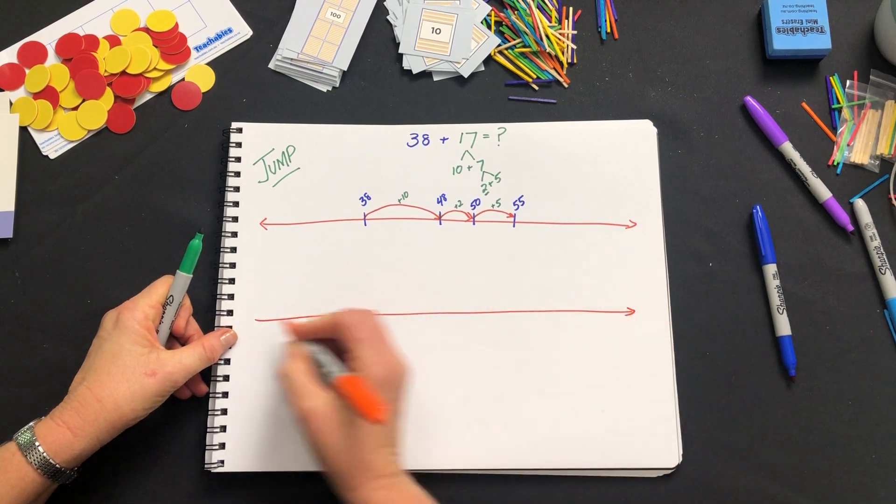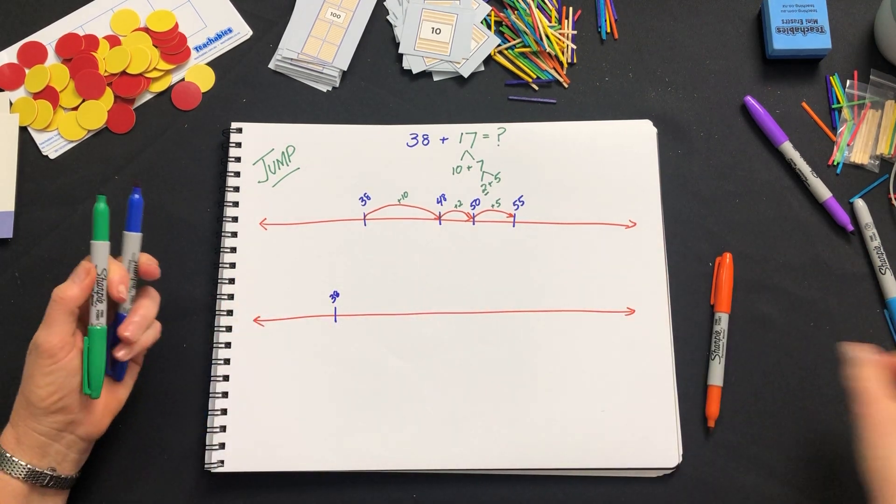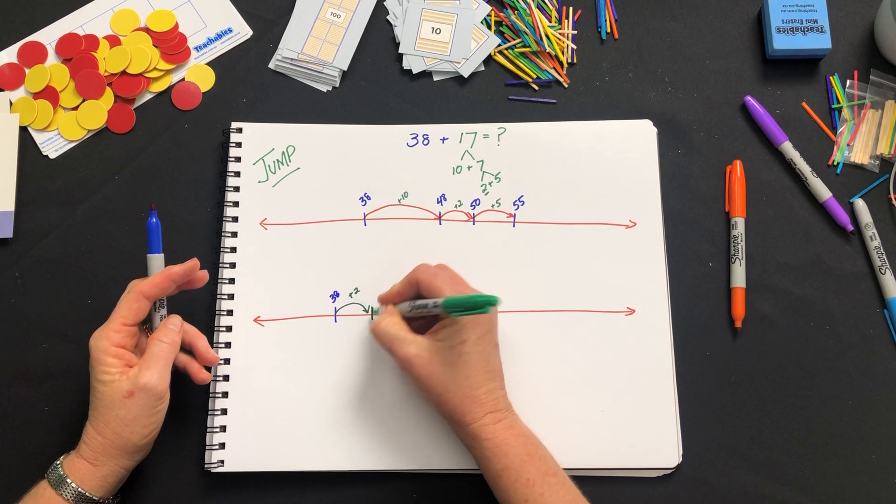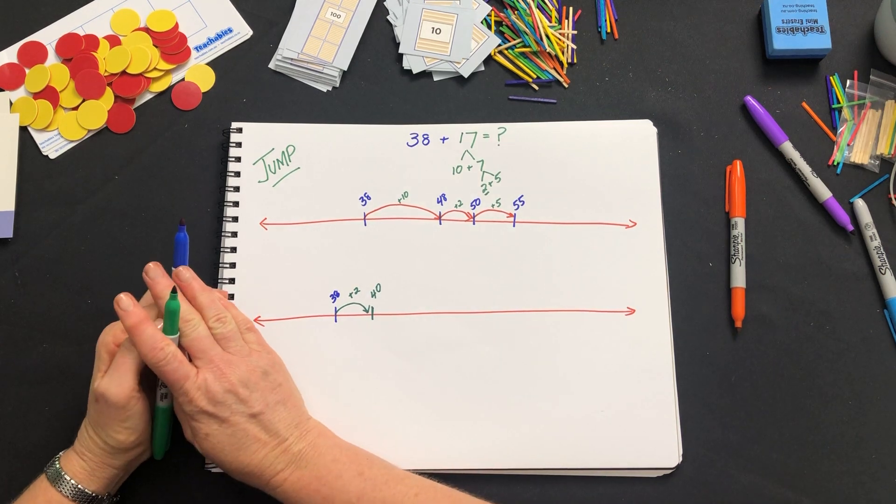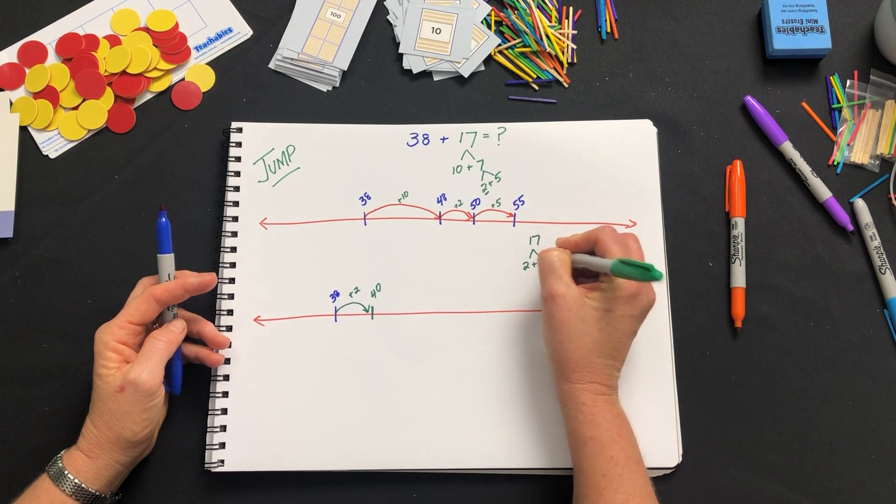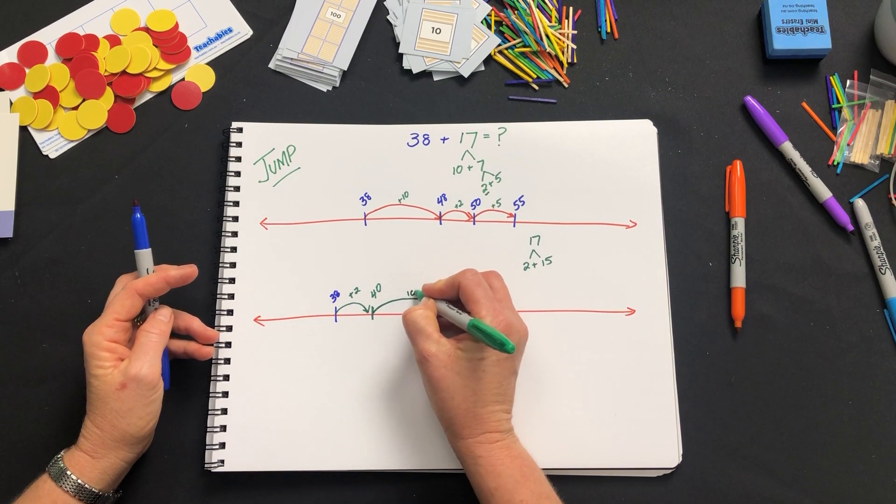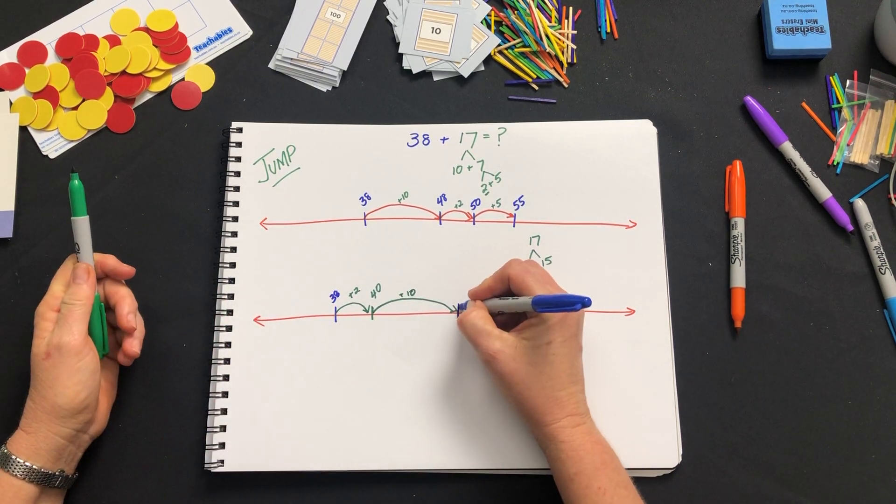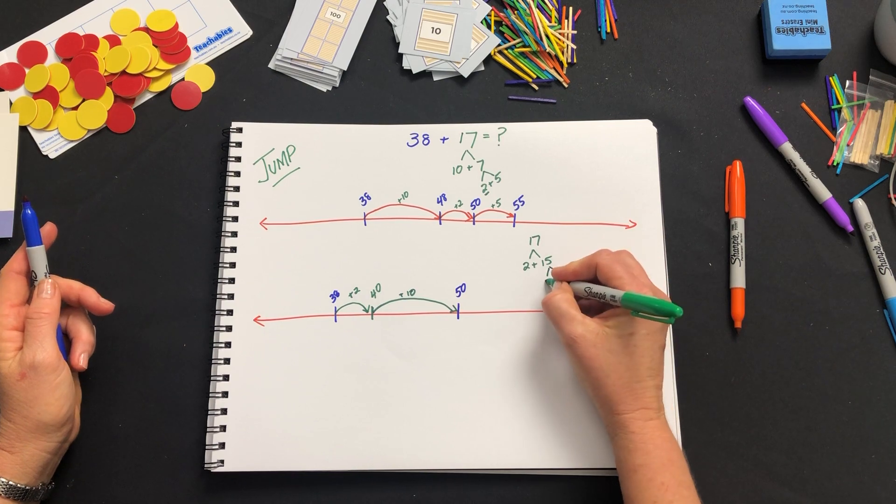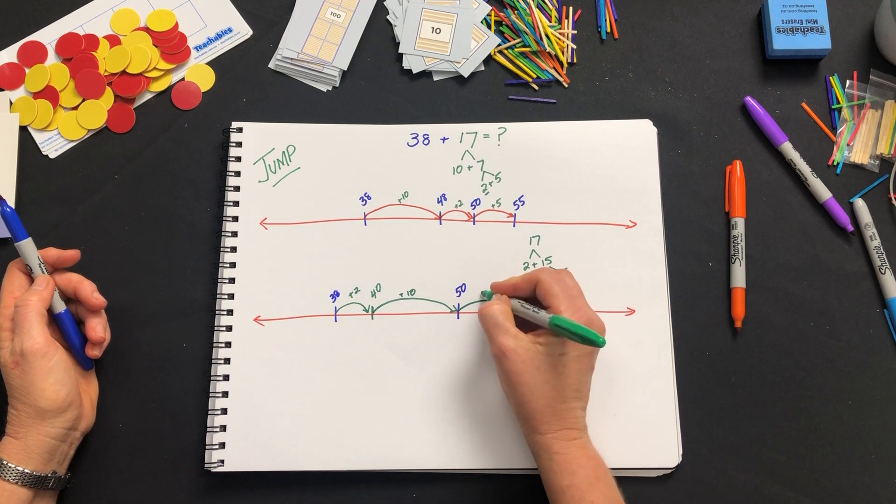For instance, I could have started with the 38 and done an initial jump of 2 to get me to 40. That would have meant that I'd partitioned 17 into 2 plus 15. I might have then jumped the 10 to get me to the 50, which meant that I partitioned the 15 into 10 plus 5, and now finally I can do that last jump of 5.